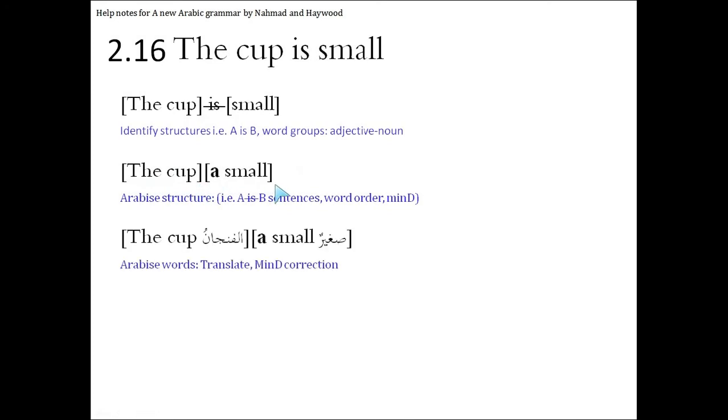Because this shows the change from the definite mubtada to the indefinite khabar, from the definite A to the indefinite B, we don't have to worry about word order, because we only have single words. So we'll translate into Arabic, al-finjanu, the cup, saghirun, small. And finjan is male, so we don't need to worry about changing saghir, so we get al-finjanu saghirun, the cup is small.